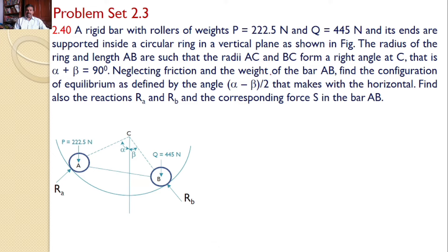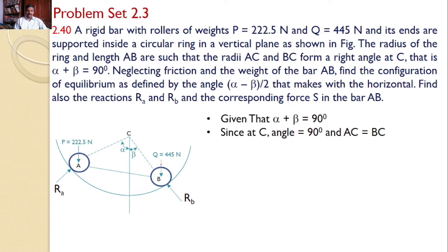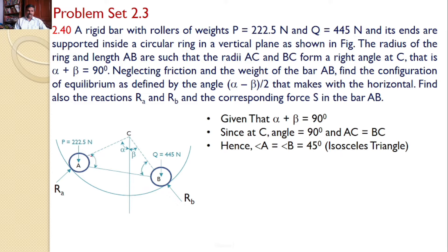First of all, let us see where this angle alpha minus beta by 2 comes from. It is given that at C we have a right angle, so alpha plus beta equals 90. It is also given that AC and BC lengths are the same, hence AC equals BC. Now since this angle is 90 degrees and these two lengths are equal, ABC is an isosceles triangle. Since it is an isosceles triangle, both base angles must equal 45 degrees.